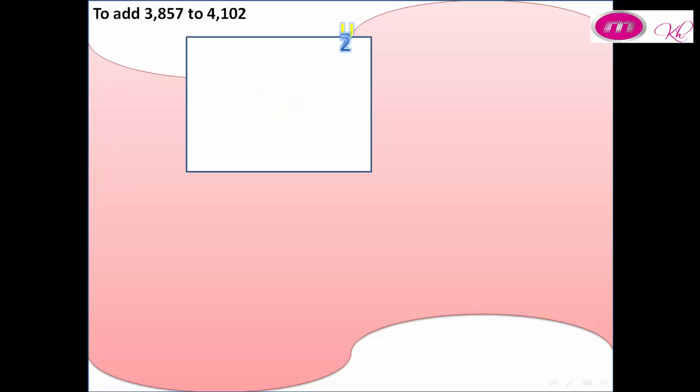First, we put units: 7 and 2, then tens: 5 and 0, hundreds: 8 and 1, thousands: 3 and 4. 7 plus 2 equals 9, 5 plus 0 equals 5, 8 plus 1 equals 9, 3 plus 4 equals 7. 3,857 plus 4,102 equals 7,959. This is addition.